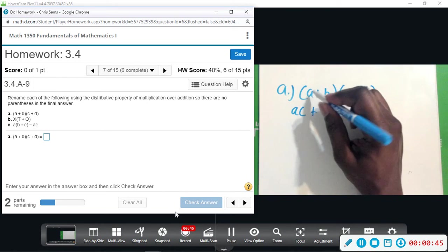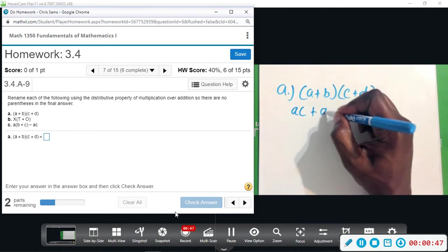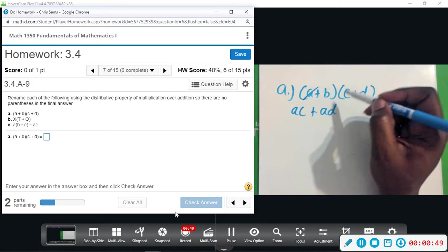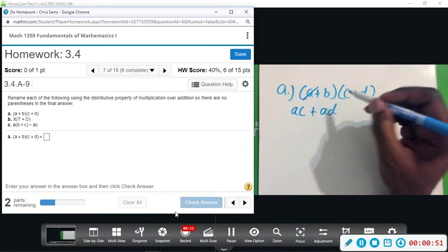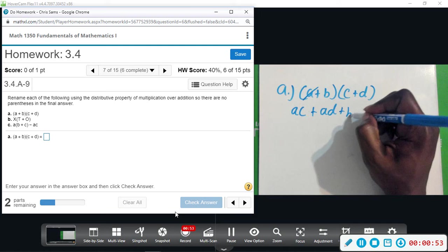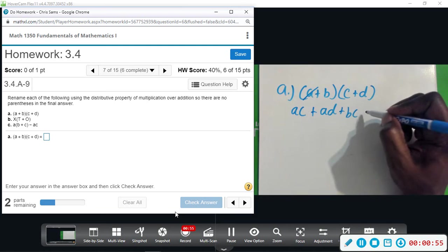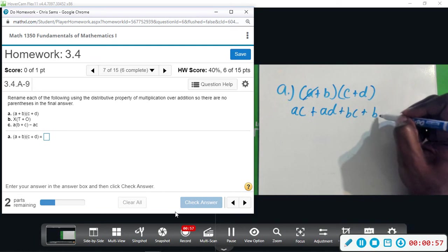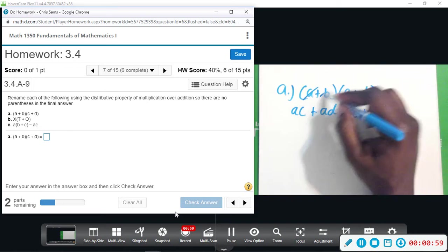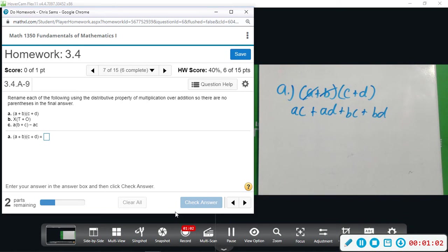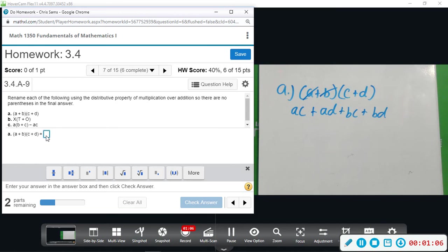So we'll get AC and then plus AD. Okay, I've done a, now I have to do b with C and D. So b times C gives us BC, and then b times D gives us plus BD. That's because we're adding each of them, so once you pair them all, that will be your solution.